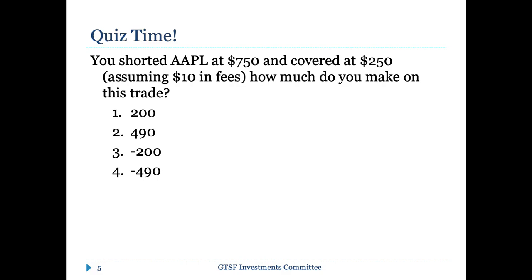The answer: $750 minus $250 equals $500, minus $10 in fees, equals $490 profit. The mechanics work like this — you borrow the stock from someone (say Josh) at $750, paying $10 to borrow it. You then sell that stock into the market. When you cover at $250, you've effectively sold at $750 and bought back at $250. That $500 difference minus the $10 borrowing fee gives you $490 profit.